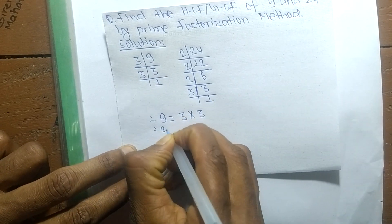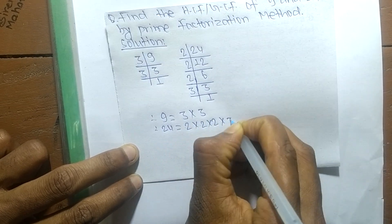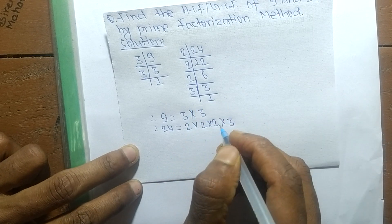Like 24 is equal to 2 times 2 times 2 times 3. So after writing all the prime factors now we have to find out the GCF or HCF.